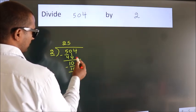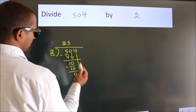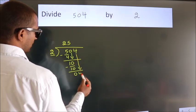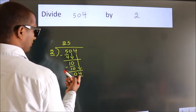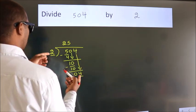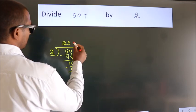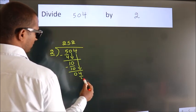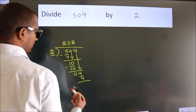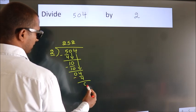After this, bring down the beside number. So, 4 down. That's 4. When do we get 4? In 2 table. 2 2s, 4. Now we subtract. We get 0.